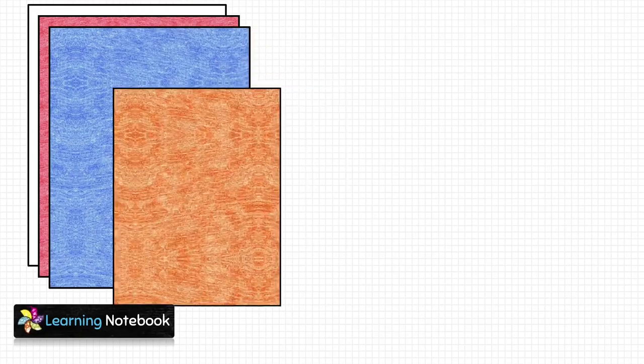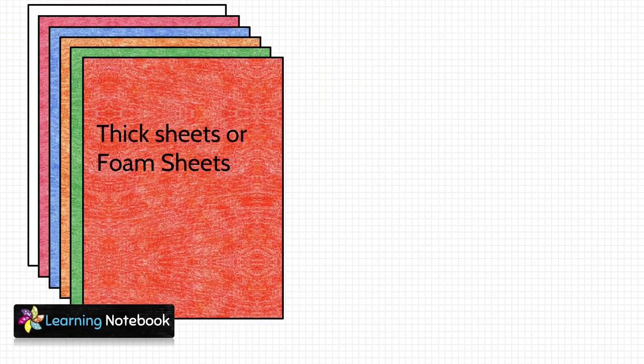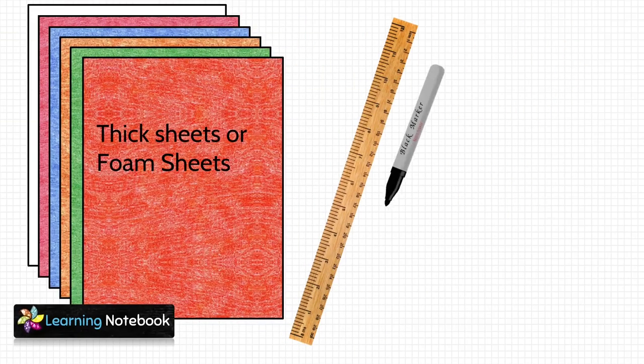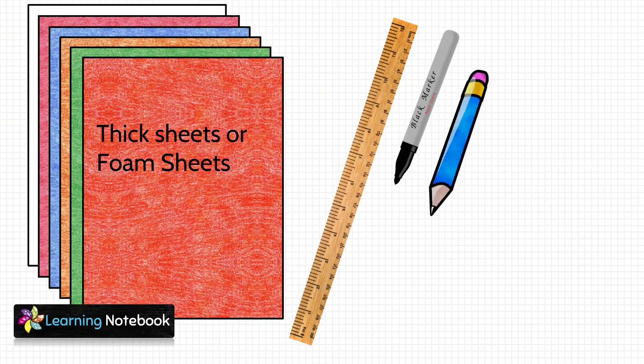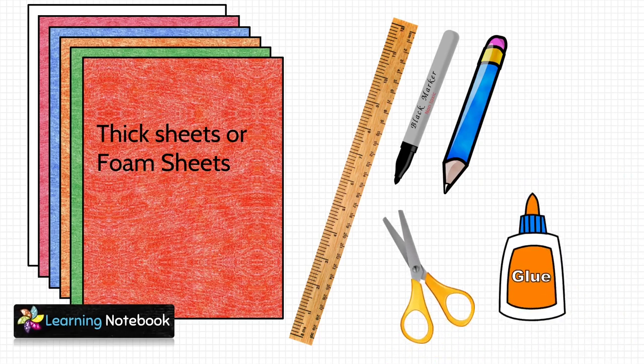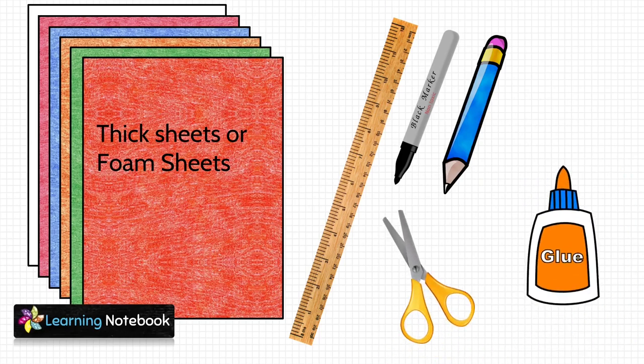For this activity we need a few colorful thick sheets, a ruler, a black marker pen, a pencil, a pair of scissors, and a glue bottle.